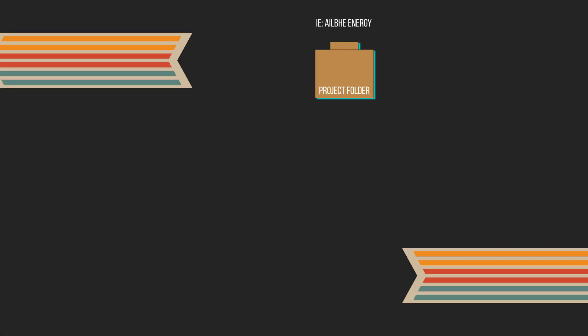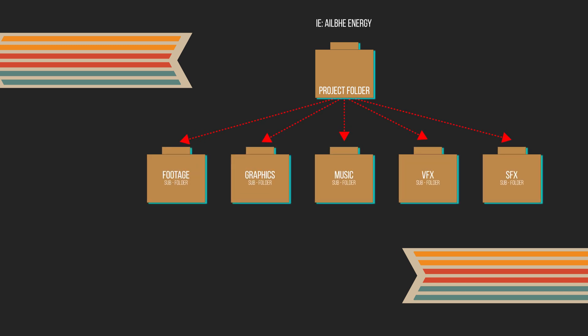That could be spent creating a great edit. So in this particular case, the project is called Alba Energy. For example, the project folder has to contain a footage folder, a folder for graphics, a folder for music, a folder for VFX, sound effects, or whatever other assets. By labeling them, it's very easy to find files after the fact.